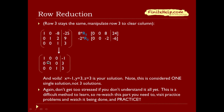Now you can see we've got this matrix exactly looking how I showed at the very beginning, and there's the solution: x equals negative 1, y equals 3, and z equals 3. Note that this is considered one single solution — not three solutions — because x, y, and z each equal one particular value.